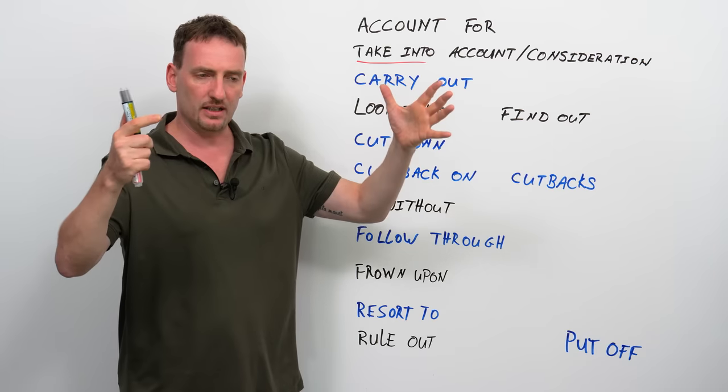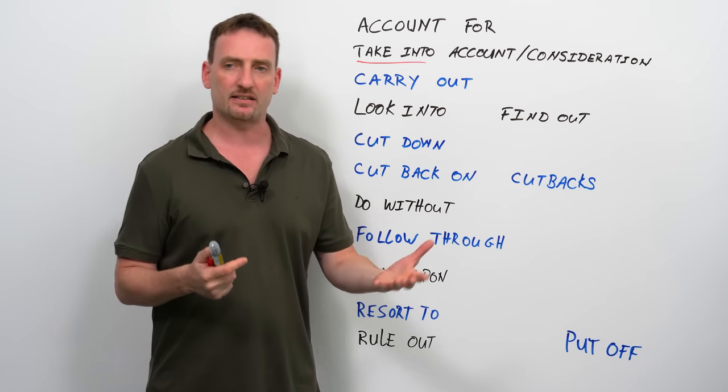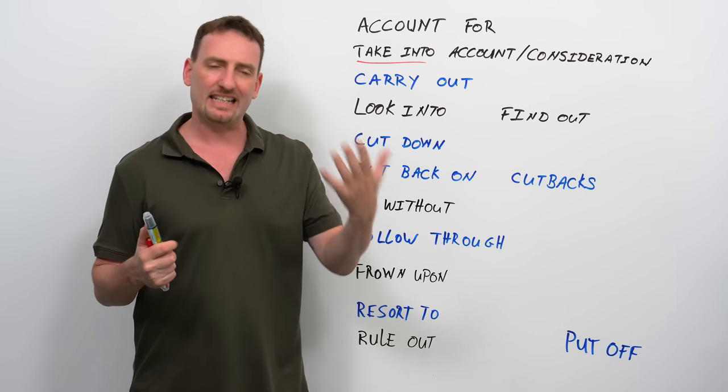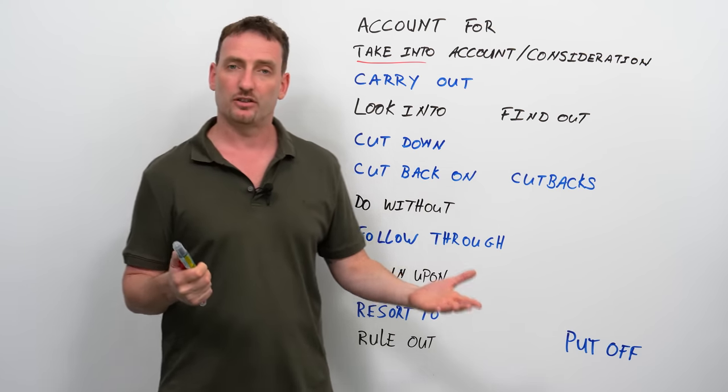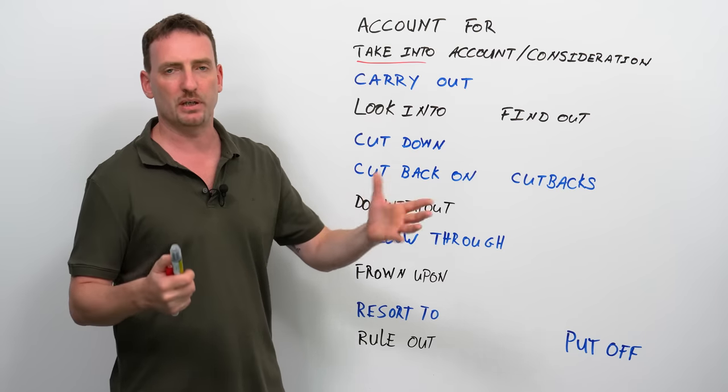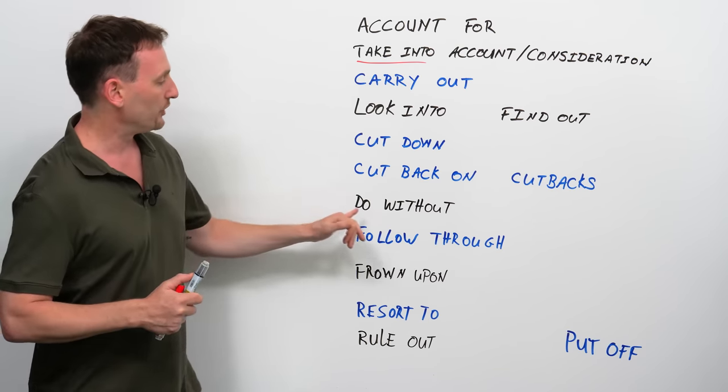Cutbacks are the situation. When a company is experiencing cutbacks, generally it means people are going to lose their jobs, because the easiest cutback to make is staff salaries. So, the company wants to cut back on expenses, it's going to let go a few people and the salaries go down and they save money.